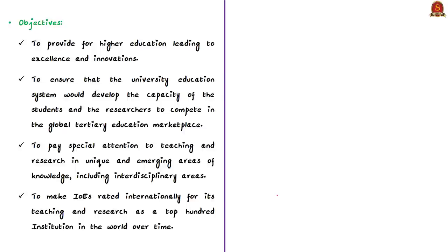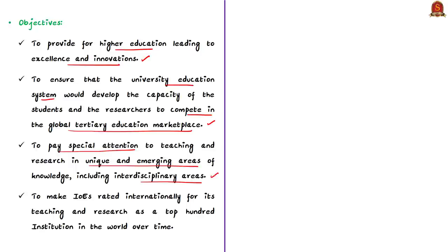The objectives of this scheme include: first, to provide for higher education leading to excellence and innovations; second, to ensure that the university education system develops the capacity of students and researchers to compete in the global tertiary education marketplace; third, to pay special attention to teaching and research in unique and emerging areas of knowledge including interdisciplinary areas. The final aim is to make institutions of eminence rated internationally as top 100 institutions in the world over ten years.